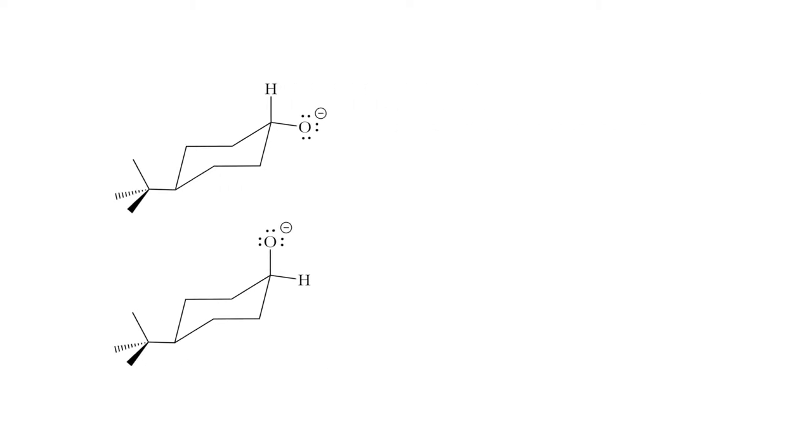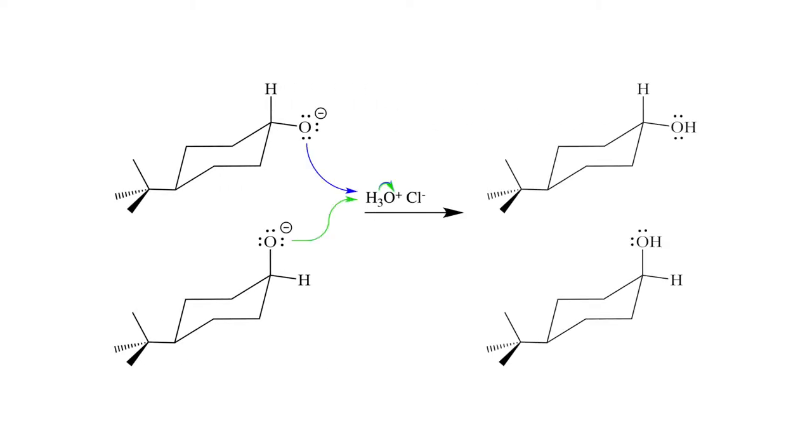Last step is adding some dilute HCl to protonate the alcohol because if we use concentrated we might get some elimination and substitution reactions.